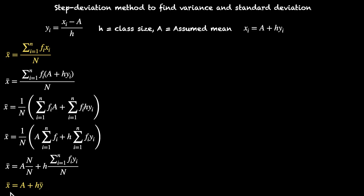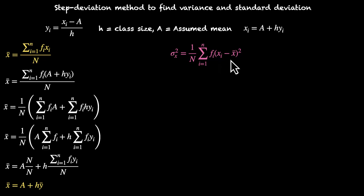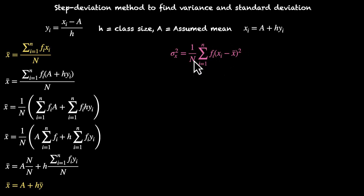So now we have a relationship between x̄ and ȳ — our original mean and y̅. Now let's talk about the variance. σx² = (1/n) × Σ fi·(xi − x̄)². That's the formula for variance. We take all the observations, subtract the mean from them, square it, multiply by the corresponding frequencies, sum all of this up, and then divide by total number of observations n.